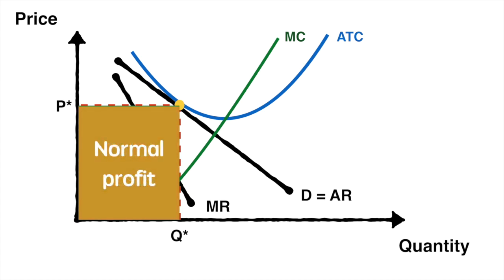We can see that the monopolistically competitive firm can only make normal profit in the long run. Since the firm is not selling at a price equal to its marginal cost, it is not allocatively efficient, nor is it productively efficient because it is producing at an average cost above its lowest possible average cost. In the next video on monopolistic competition, we'll see how firms in this type of market structure can earn supernormal profits in the short run.